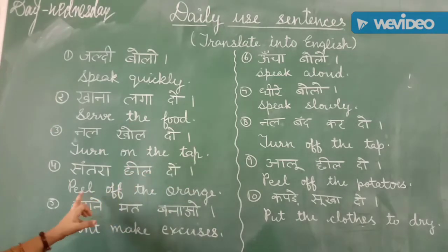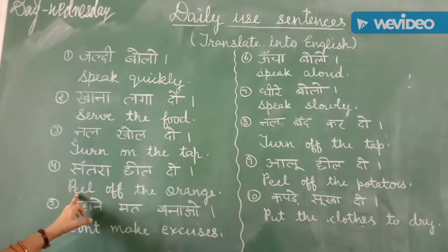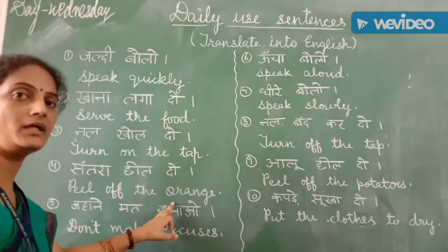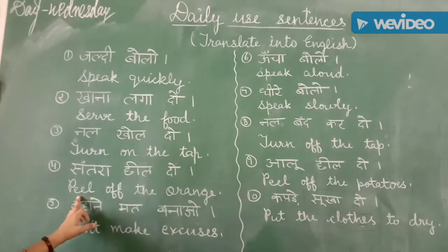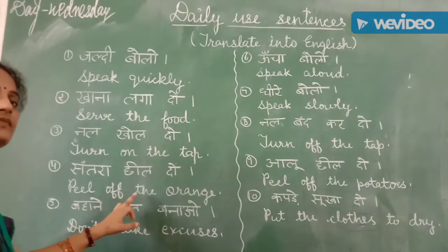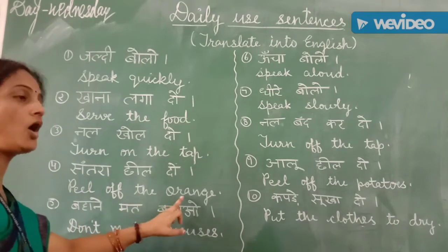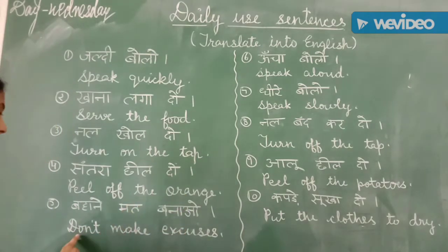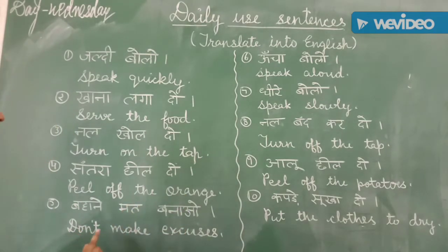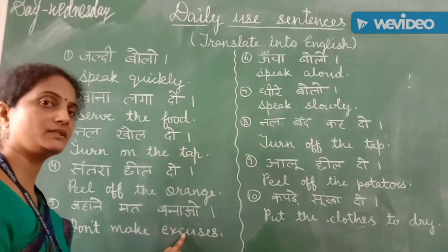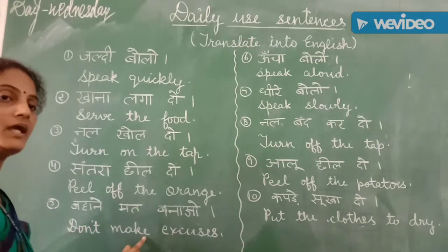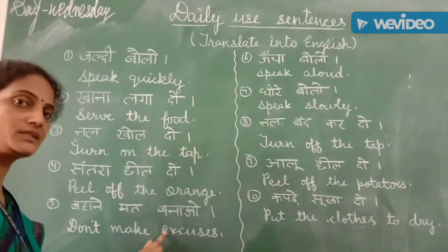Okay. Now read again: peel off the orange. Peel off the orange. Next sentence is: don't make excuses. Read again: don't make excuses.